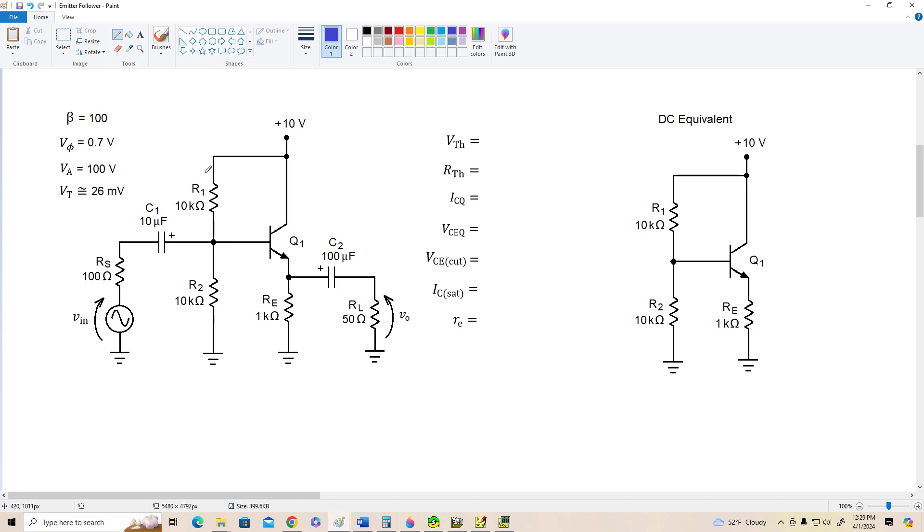And notice that I've added a source resistance here. That's the whole reason why we'd use an emitter follower to begin with, is to prevent this low impedance load from loading down this source. The amplifier acts as a buffer between the input source and the load resistor.